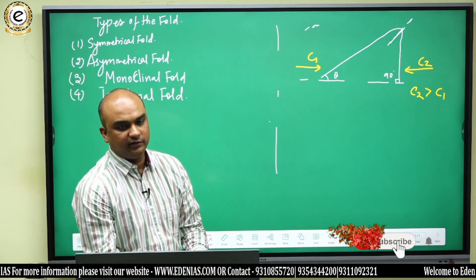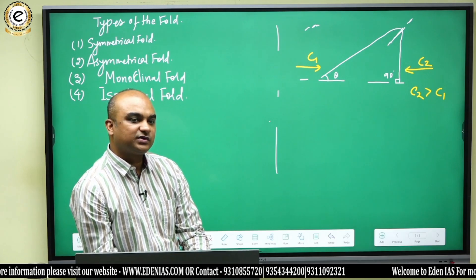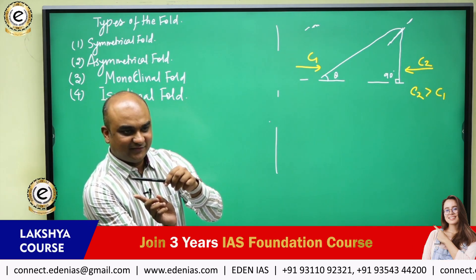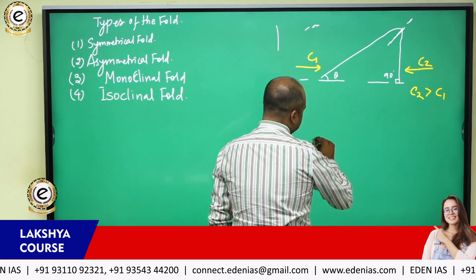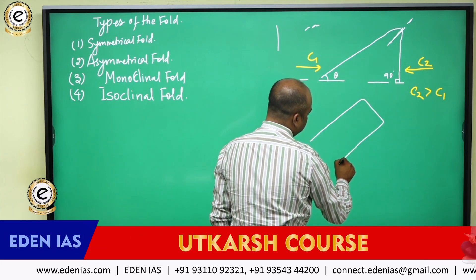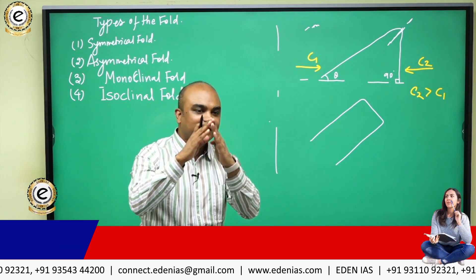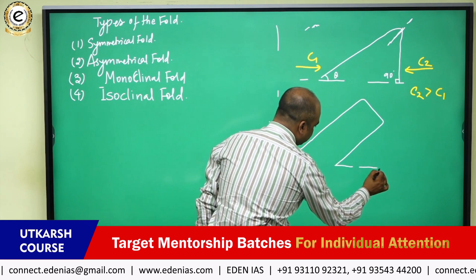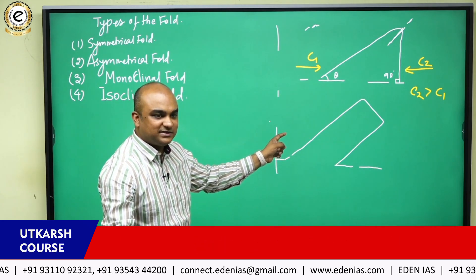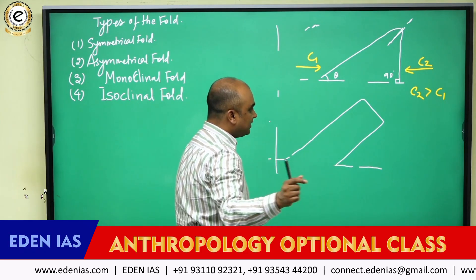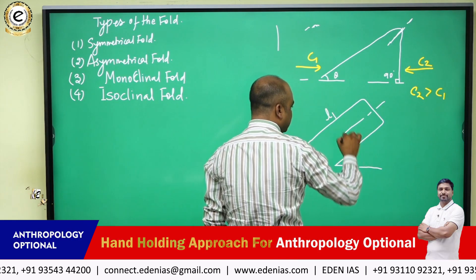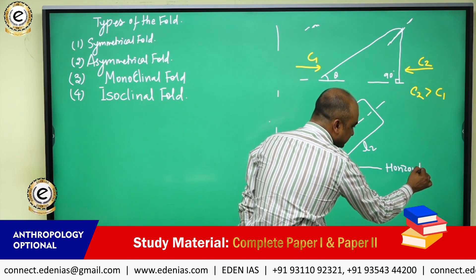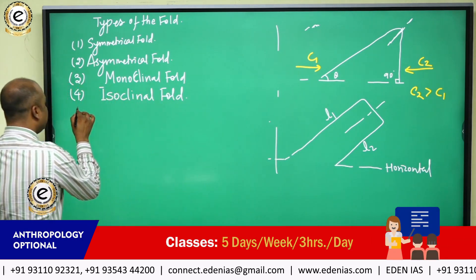Then comes the isoclinal fold. An isoclinal fold is one where both the limbs have become parallel to each other, but they are not parallel to the horizontal. Limb one and limb two are parallel to each other but not to the horizontal. That is an isoclinal fold.